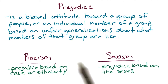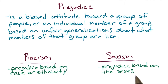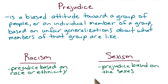If we have a prejudice that is based on race or ethnicity, we call that racism. Or if we have a prejudice based on the sexes, we call that sexism. There is a lot of very interesting research, especially in the area of industrial organizational psychology, that looks at both prejudice and discrimination.